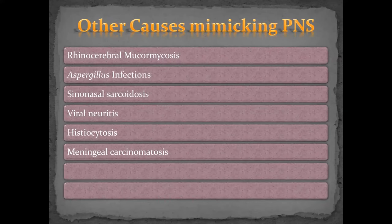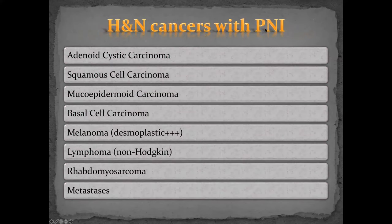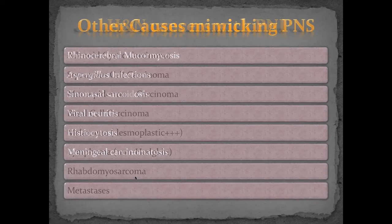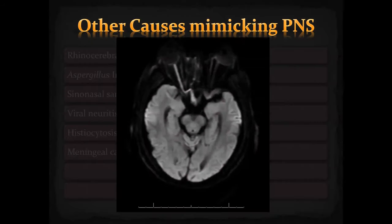Many cancer types can cause perineural invasion: adenoid cystic carcinoma, squamous cell carcinoma, mucoepidermoid carcinoma, basal cell carcinoma, melanoma, lymphoma, rhabdomyosarcoma, and metastases. Even benign conditions like mucormycosis can invade nerves — one patient when I was a fellow at Davis had optic neuritis and cavernous sinus involvement from mucormycosis and unfortunately died eight or nine months after surgery.